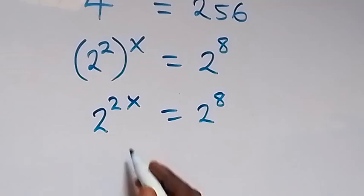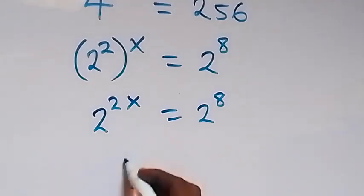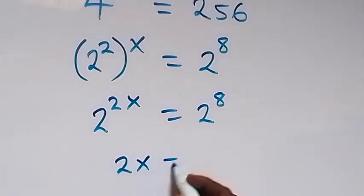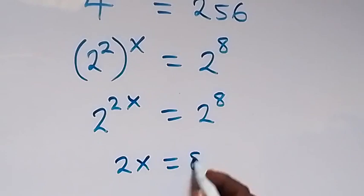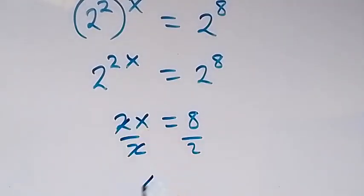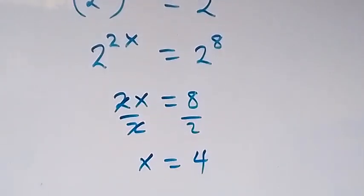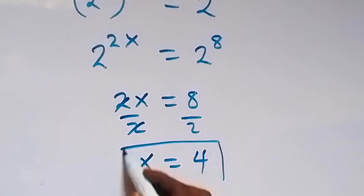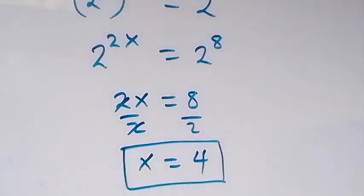Here we have the same base, so we can equate the powers. Then 2x equals 8. Dividing both sides by 2, the 2s cancel and x is equal to 8 over 2, which is 4. So we have x equals 4 from this given problem.